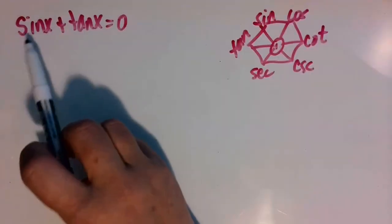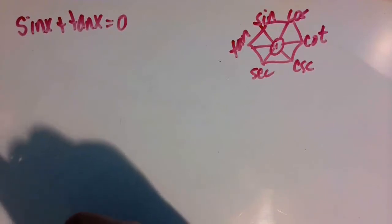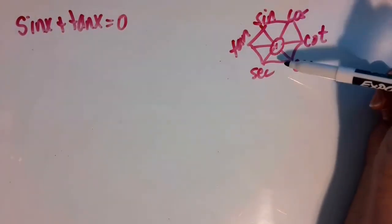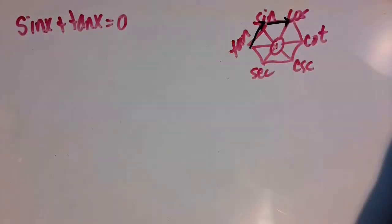In this video, we're going to solve the trig equation sine of x plus tangent of x is equal to zero. And on our trig identity hexagon, tangent is the quotient of sine divided by cosine.